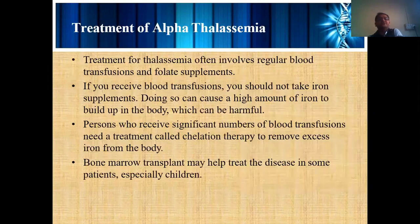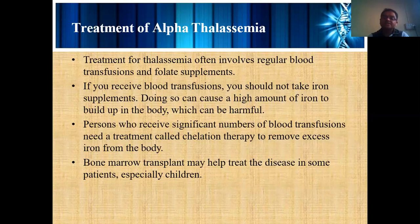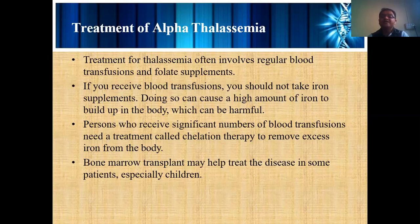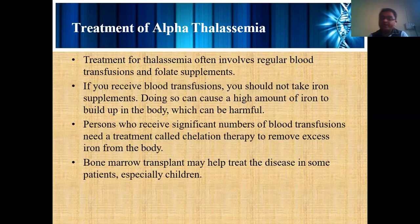Treatment for thalassemia often involves regular blood transfusion and folate supplements — folic acid supplements given regularly in the daily diet, which is the best choice for thalassemia patients. In some cases, regular blood supply is required. If you receive regular blood transfusions, harmful components such as excess iron may build up, and to remove this excess iron, chelation therapy is required. Iron supplements should not be taken independently.